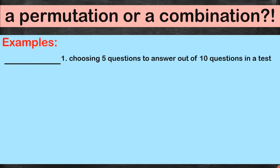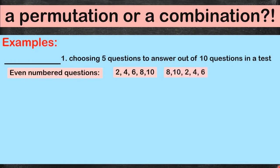For example, you chose the even-numbered questions — two, four, six, eight, ten. But maybe you found number four difficult, so you skipped it and answered eight and ten first, then came back to two, four, and six.